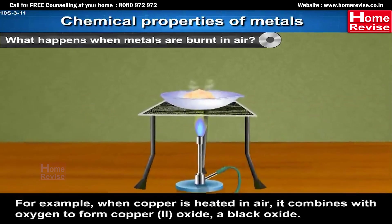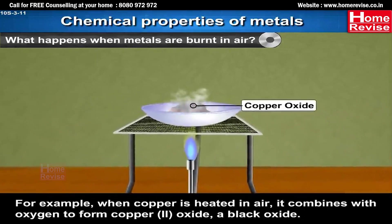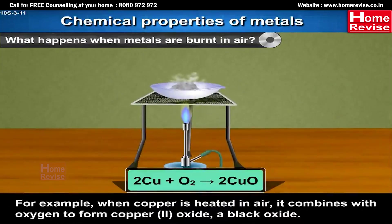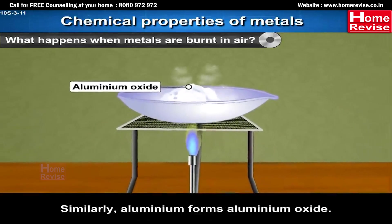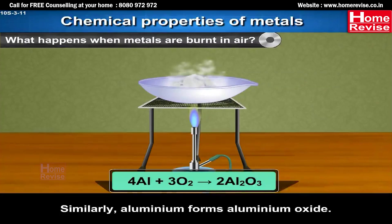For example, when copper is heated in air, it combines with oxygen to form copper oxide, a black oxide: 2Cu + O₂ → 2CuO. Similarly, aluminium forms aluminium oxide: 4Al + 3O₂ → 2Al₂O₃.